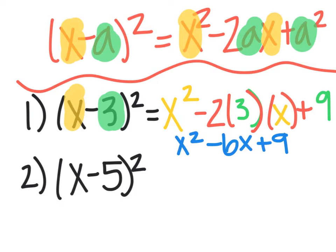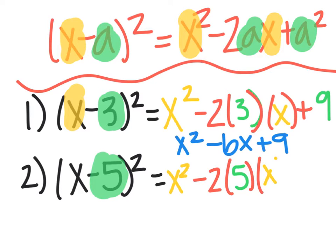Then if I have (x-5)², the x part is still the same. My a part in this problem is five, so this equals x² minus two times five times x, plus,